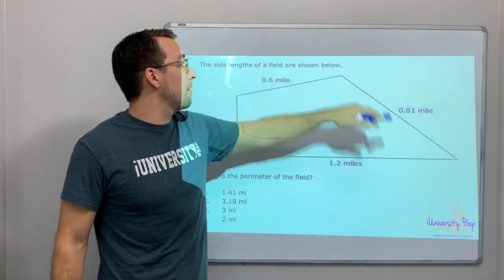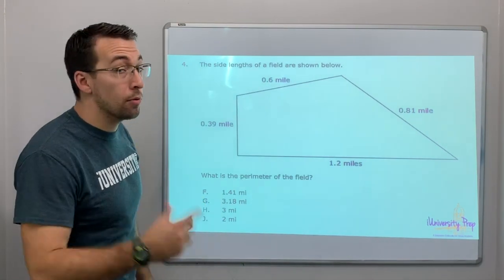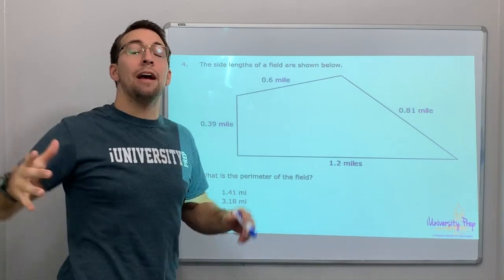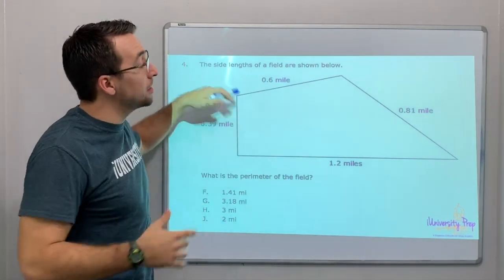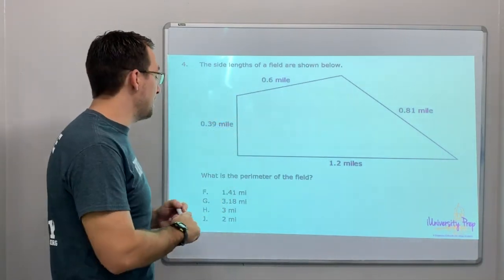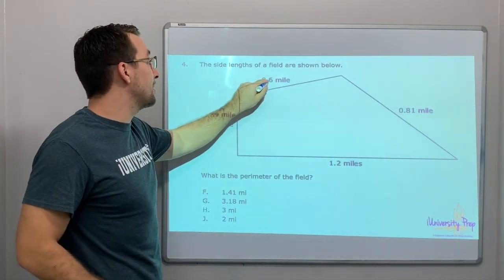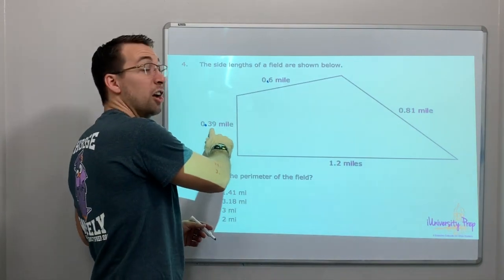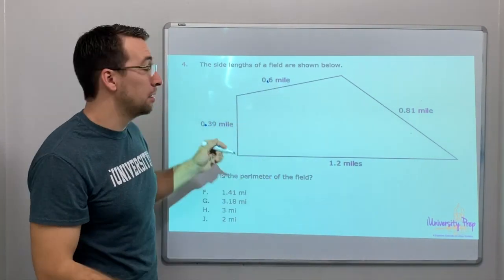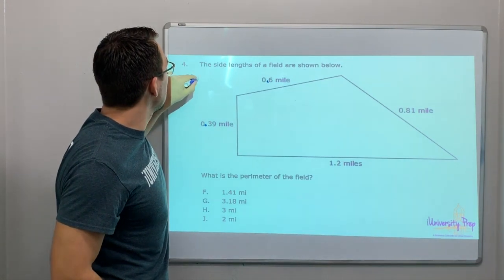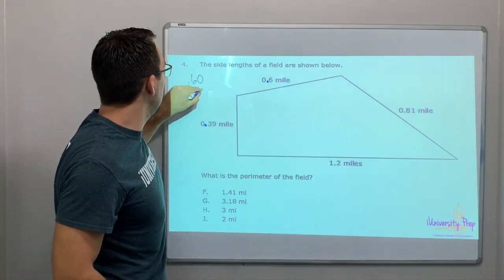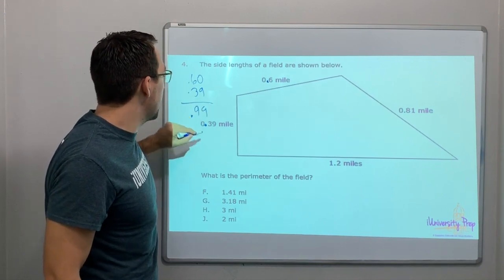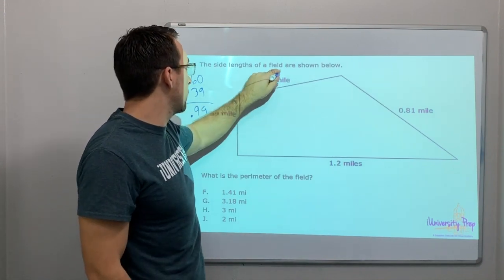The side lengths of a field are shown below. What is the perimeter of the field? Perimeter is all the way around, so you have to add these lengths up. This one's tricky because A, you have a decimal, so you have to line up the decimal. And then B, you have different decimal values. This is 39 hundredths, and this is 6 tenths. So we do .60 plus .39 equals .99.